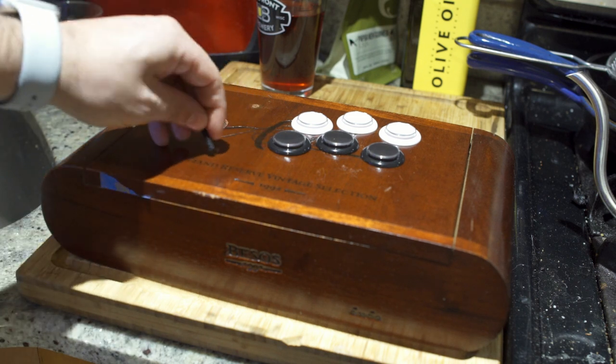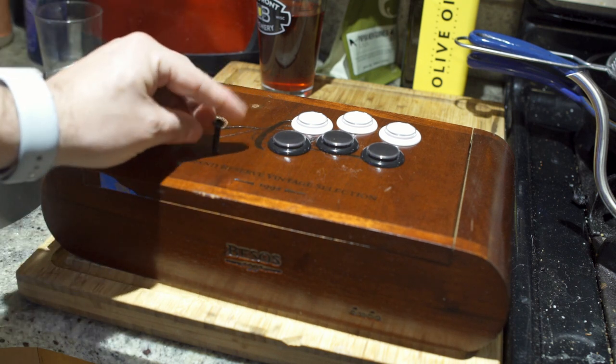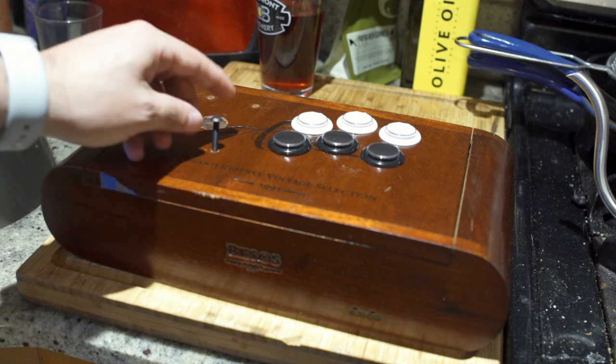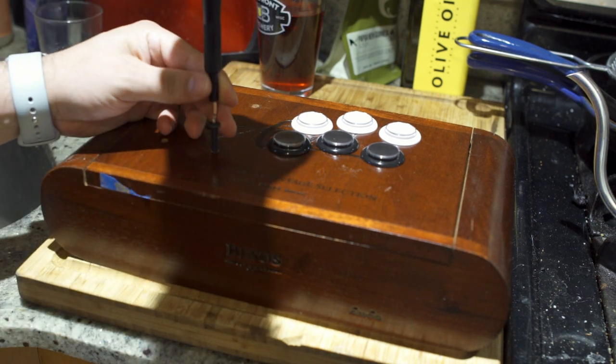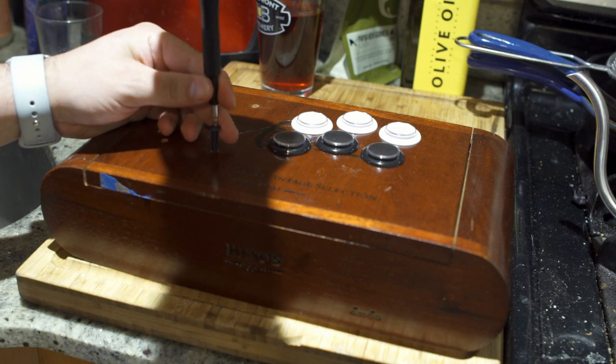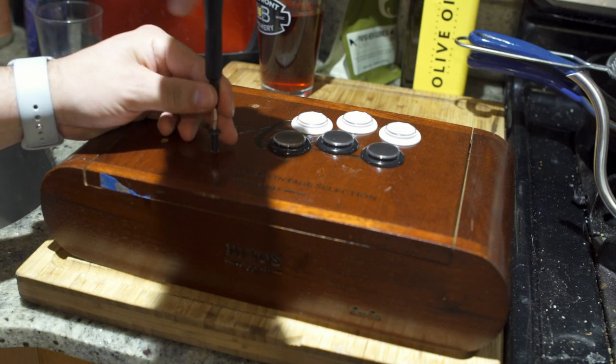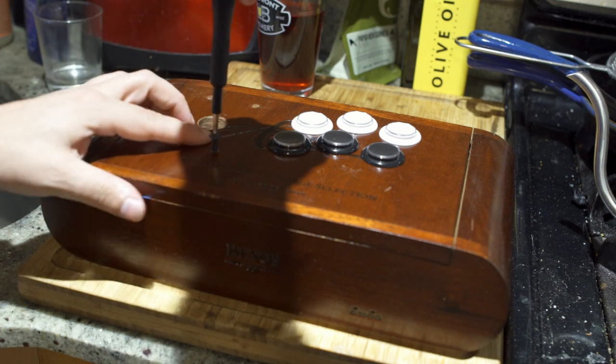So now you see the case that we're actually using for this project. All six buttons are in there. There really isn't much to teach you on how to do that. You push the button through and then you just use the small screw clamp that goes on the back of the button to hold it in. What those four holes there are is that is the gate pattern for the arcade stick. We're using a Sanwa, and that's where the screws are going to go.